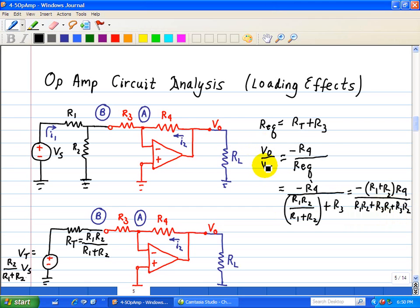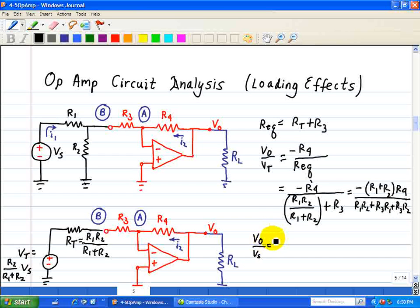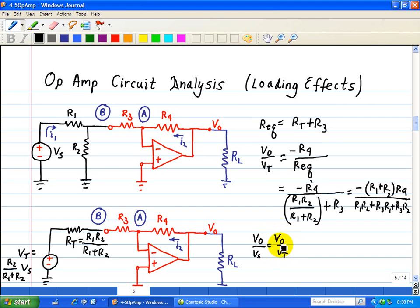So that's our ratio of V0 and Vt, but we're asked to find V0 over Vs. So we can go V0 over Vs is equal to V0 divided by Vt, which we just found here. And that Vt over Vs, which we found from this circuit here, using the voltage divider. So multiplying these two expressions, let me highlight that.